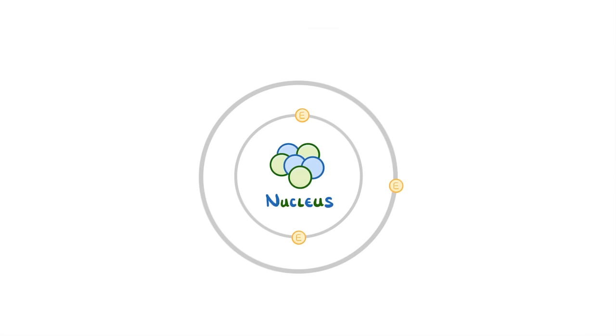In this atom that we've drawn, we have three protons in the nucleus, and three electrons orbiting it. Because the number of protons and electrons is equal, the positive and negative charges balance out, and so overall the atom is neutral.